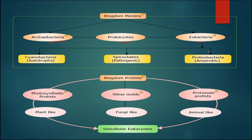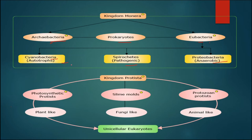Eubacteria are of various types depending upon their mode of nutrition. Some are autotrophs and some are heterotrophs. Autotrophs are again of two types: photoautotrophs (e.g., cyanobacteria or blue-green algae, which perform photosynthesis and fix atmospheric nitrogen) and chemoautotrophs (which produce food from chemicals). Some heterotrophic bacteria are also pathogenic, responsible for various diseases.